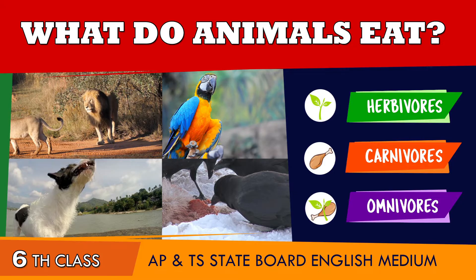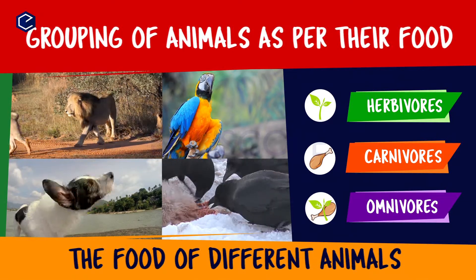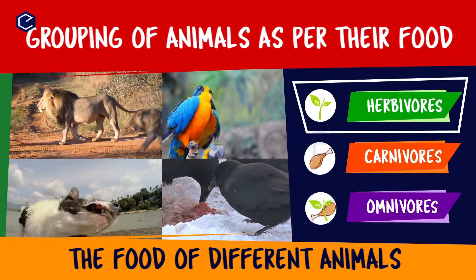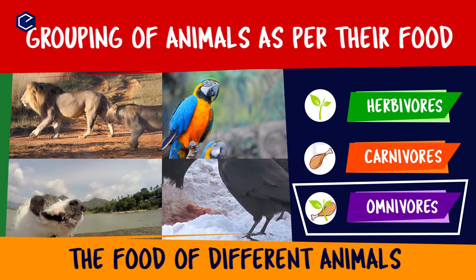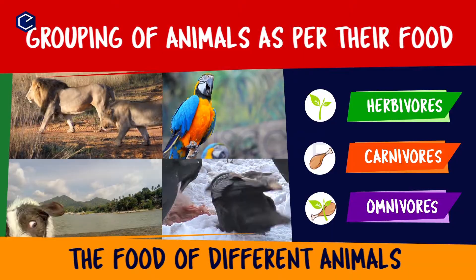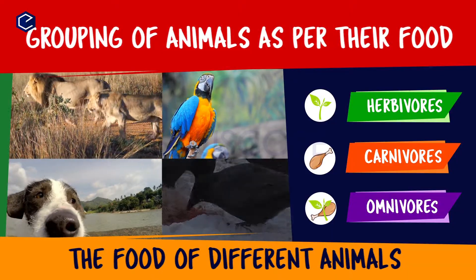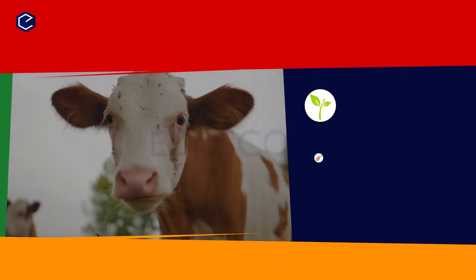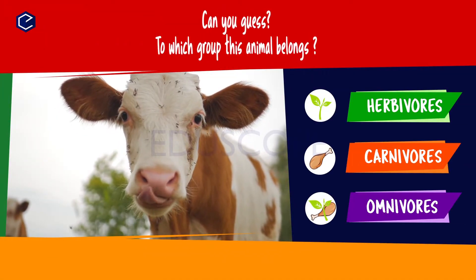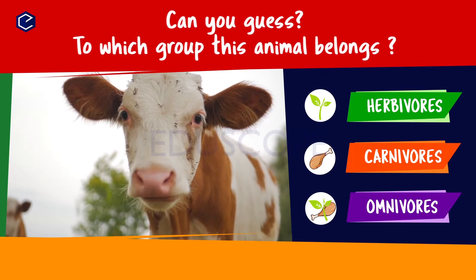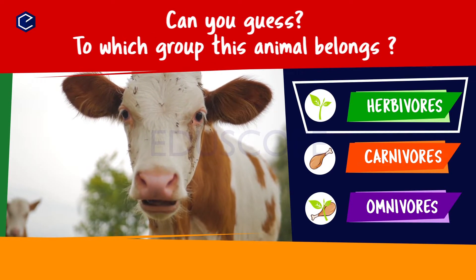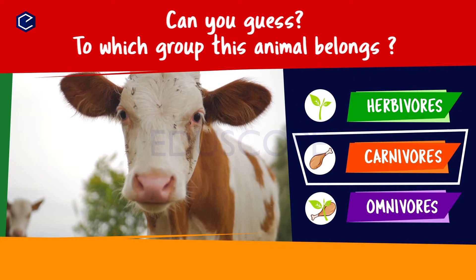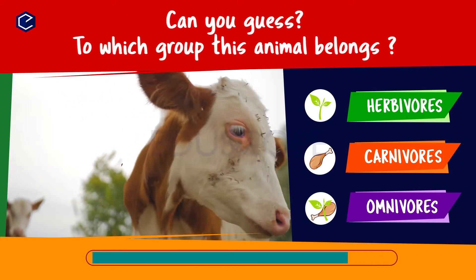What do animals eat? In this video, we will try to group the animals into herbivores, carnivores, and omnivores, and also learn what these animals eat. Can you guess to which group this animal belongs? Herbivores, carnivores, omnivores.